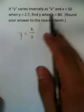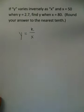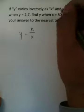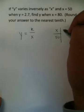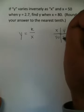Now, this k is some constant. Typically, they won't tell you what that constant is. Now, what they did tell you is that x is 50 and y is 2.7.